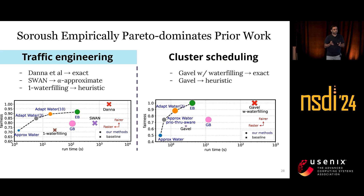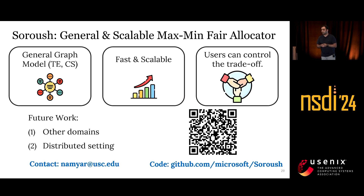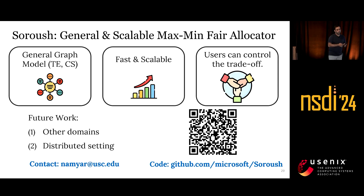To conclude, Souroush is a general and scalable max-min fair allocator that can solve any problem we can describe as a graph. It's fast and scalable, and has parameters to enable users to control trade-offs between efficiency, fairness, and speed. In the future, we are interested in extending Souroush to other domains and also extending some approaches to distributed settings. Our code is publicly available — if you're interested, please check it out. Thank you.